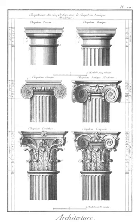Entablature: a superstructure of mouldings and bands which lie horizontally above columns, resting on their capitals. Entasis: the application of a convex curve to a surface for aesthetic purposes. Its best known use is in certain orders of classical columns that curve slightly as their diameter is decreased from the bottom upward. It also may serve an engineering function regarding strength.